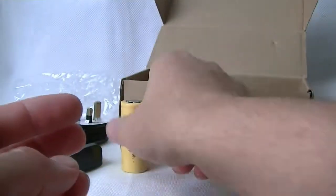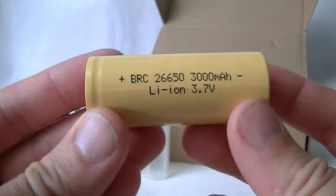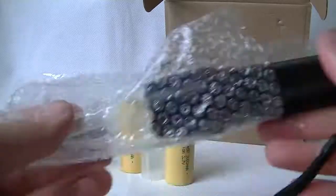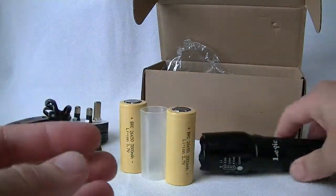Next out we have two yellow batteries which are plain apart from this writing which basically says BRC 26650. It's got a 3000 milliamp hour, it's a lithium ion battery and it runs at 3.7 volts. Remember you get two of those, and then finally we have the torch itself in a small patch of bubble wrap.